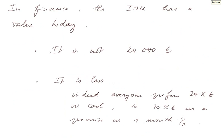Now let's turn to the financial point of view about this AOU. In finance, the AOU has a value today — that's a very important concept, the value today. And this value today is not 20,000 euros; 20,000 euros is only the face value, that is the money promised in 45 days. The value today is less. Indeed, everyone prefers 20,000 euros in cash than 20,000 euros as promised in one month and a half. Therefore, the AOU is worth less than 20,000 euros in cash.